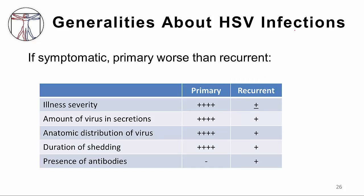With regards to primary versus recurrent infections, primary infections are the first time a patient has experienced the infection, while recurrent infections occur time and time again. In general, primary infections, when associated with symptoms, tend to be very severe, whereas recurrent infections are quite mild. Primary infections also tend to have a large amount of virus shed from secretions, while recurrent infections shed only a little.